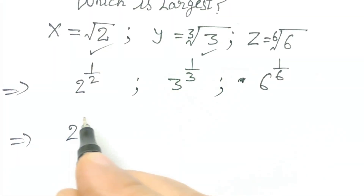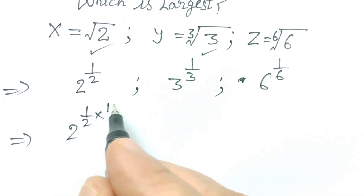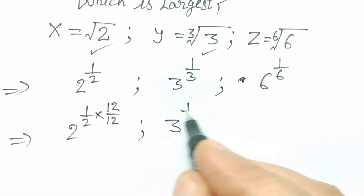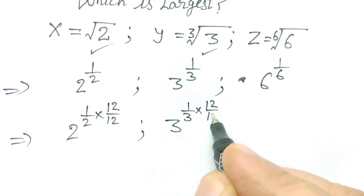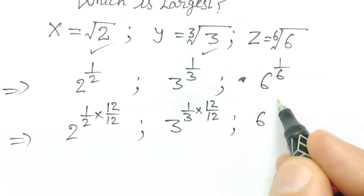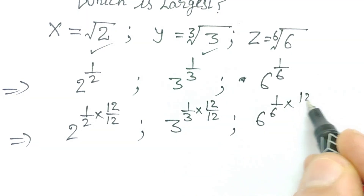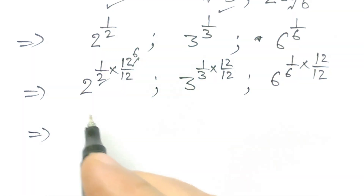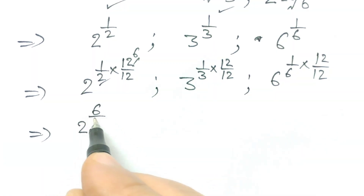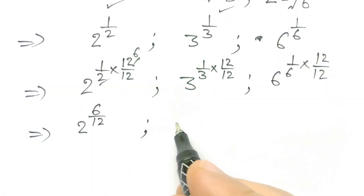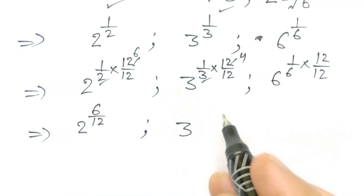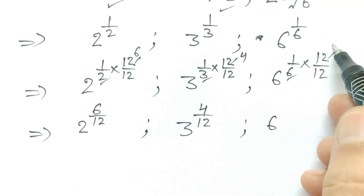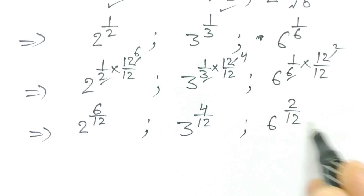Now, for 2 to the power half, if we multiply numerator and denominator by 12, we get 2 to the power 6 over 12. Similarly, 3 to the power 1 by 3 becomes 3 to the power 4 over 12, and 6 to the power 1 by 6 becomes 6 to the power 2 over 12.